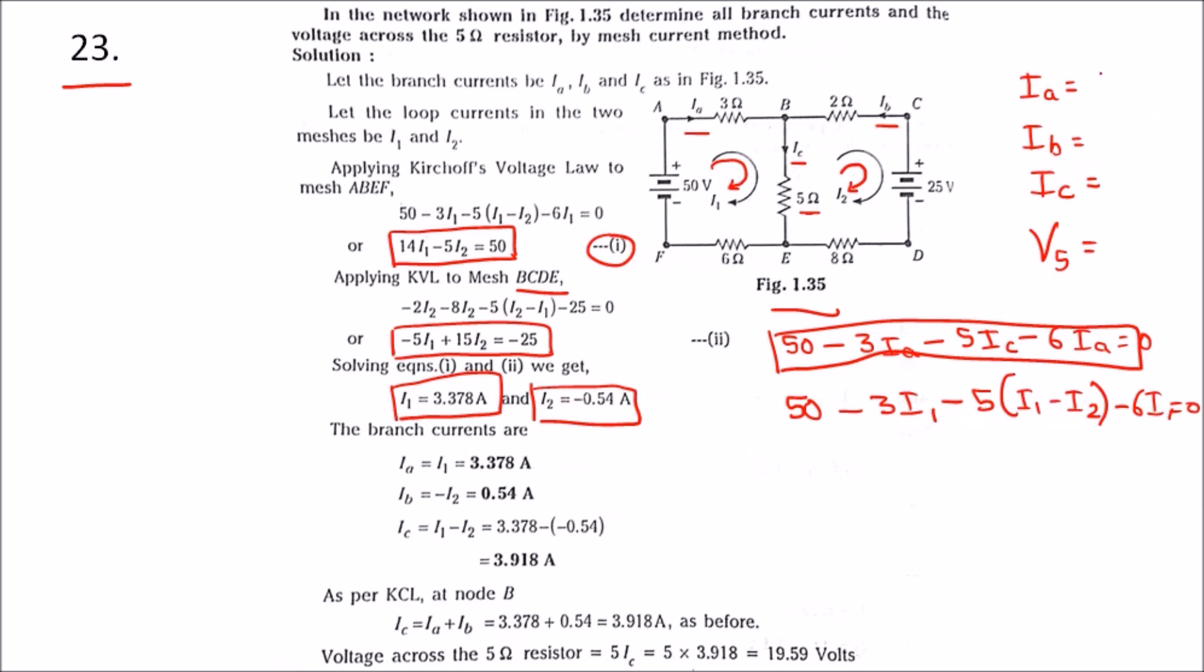Ib equals I2, which is 0.54 amps. From the figure, Ic is the addition of Ia and Ib, which equals 3.918 amps.